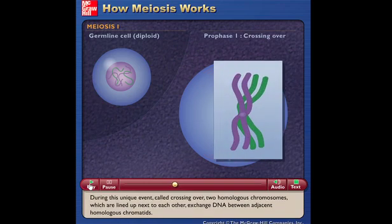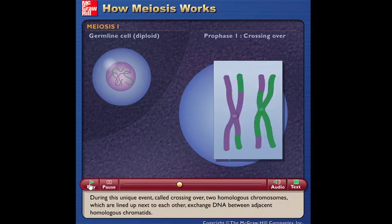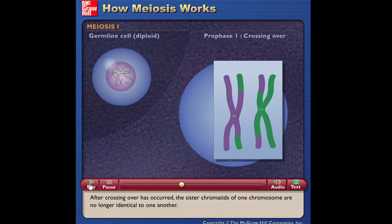During this unique event, called crossing over, two homologous chromosomes, which are lined up next to each other, exchange DNA between adjacent homologous chromatids. After crossing over has occurred, the sister chromatids of one chromosome are no longer identical to one another.